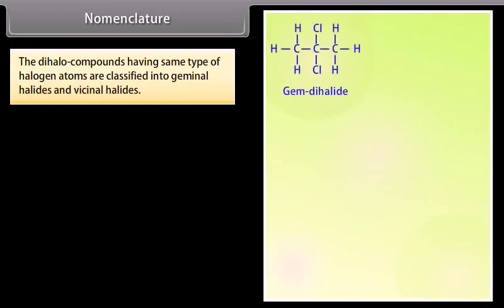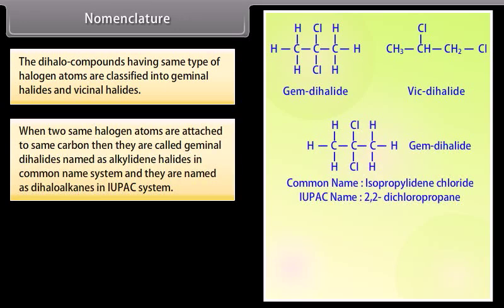Nomenclature. The dihalo compounds having the same type of halogen atoms are classified into geminal halides and vicinal halides. When two same halogen atoms are attached to the same carbon, then they are called geminal dihalides, named as alkylidene halides in common name system, and they are named as dihaloalkanes in IUPAC system.